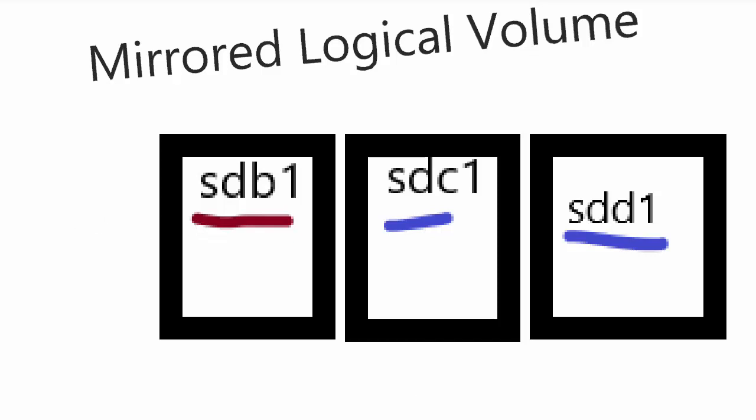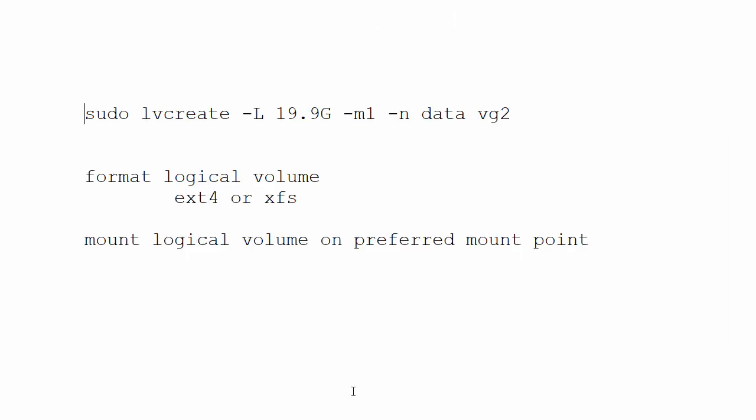But if you really want to see how to do a mirrored logical volume, again, all the preliminary steps are the same as they were. So, what we're doing here is we're adding three drives, three physical volumes to the volume group this time, and we're going to use two of those drives for the actual data and one for the mirrored log.